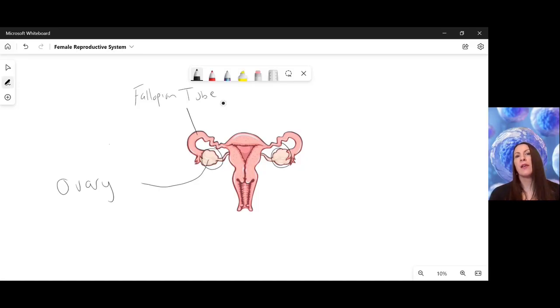So this is the fallopian tube. The correct term for fallopian tube is oviduct. And eggs, the correct term, they're referred to as ova for plural or ovum if we're just talking about one egg. So the egg will be released and it will be swept into the fallopian tube by the help of these little finger like projections called fimbriae.